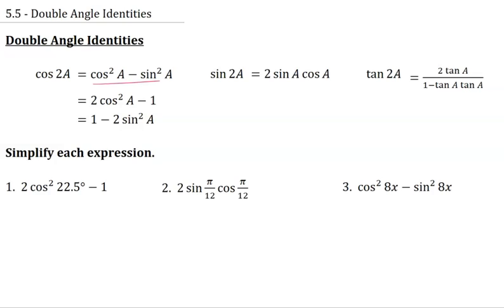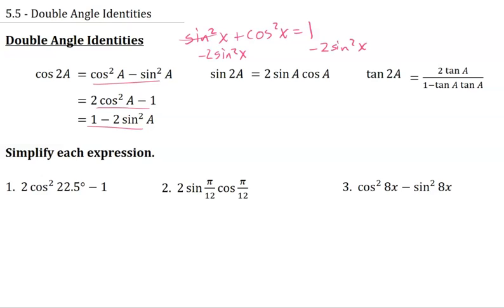We can see how these forms are related. If you think about the Pythagorean identity, sine squared x plus cosine squared x equals 1. If I'm doing cosine squared minus sine squared, I would subtract 2 sine squared x from both sides, giving cosine squared minus sine squared, which is the same as 1 minus 2 sine squared. Or I could replace the sine squared with 1 minus cosine squared, distribute the negative 2, add the 1, and get the third form.